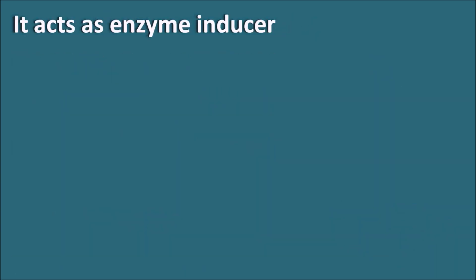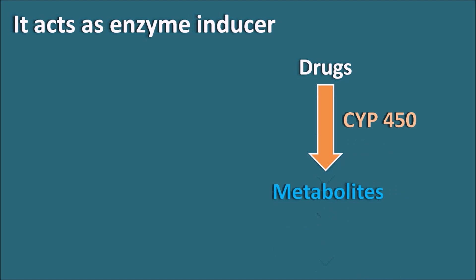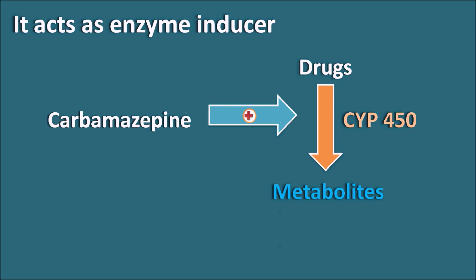Carbamazepine acts as an enzyme inducer. Drugs are metabolized by the cytochrome P450 system, including enzymes such as CYP3A4 and CYP2D6. Carbamazepine can induce these enzymes, increasing the metabolism of other drugs and thereby decreasing their pharmacological actions, leading to treatment failure. Whenever carbamazepine is given with other drugs, possible drug interactions should be checked and doses adjusted. Interestingly, carbamazepine can also induce its own metabolism — it is a self-enzyme inducer.